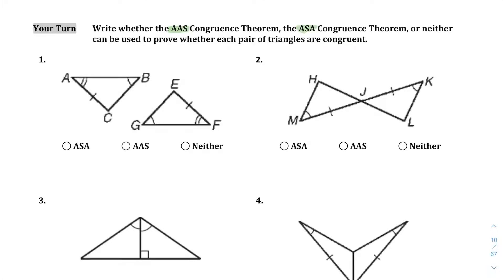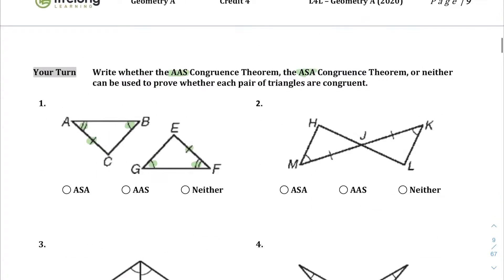Looking at the practice questions, it looks like we're using the first two. Triangle ABC here has angle, angle, side — that's looking good. And then same thing for triangle GEF: angle, angle, side. So we can use angle-angle-side for that one.